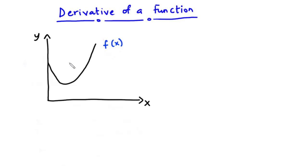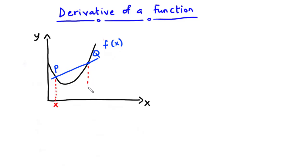This is the y-axis and we also have the x-axis. Now let's draw a line passing through the curve creating two points on the curve. We have this as point P and this as point Q. From point P to the x-axis let's call this x, and from point Q to the x-axis is a small distance from the coordinate x. Let's call the distance between x and the new coordinate as h.